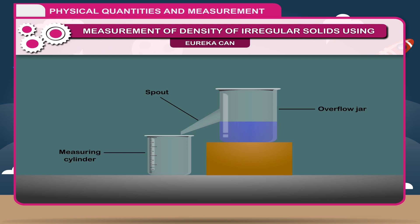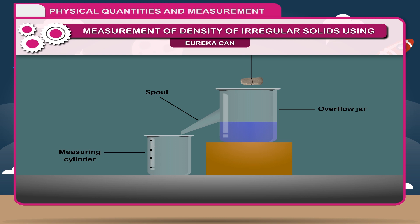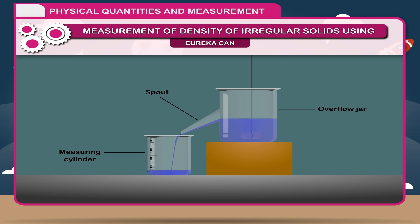Tie the solid to a thread and immerse it completely into the water of the overflow jar. If the solid is soluble in water, replace water with a liquid in which it is insoluble. The solid displaces water which overflows through the outlet pipe and collects in the measuring cylinder.